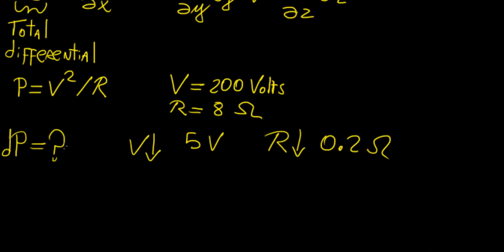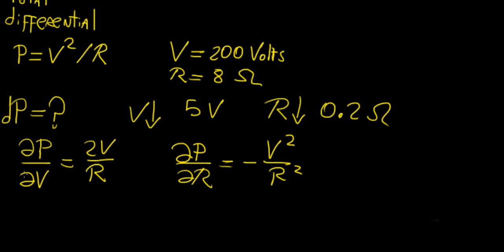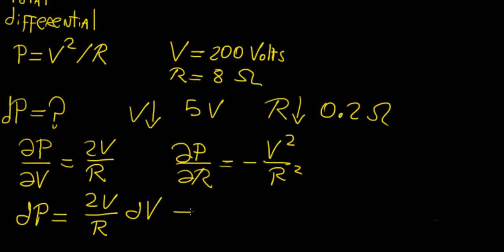So what is going to be the total change in the power if we change each of these quantities by that much? Well, the first thing we need to do is calculate the partial derivatives. The partial of p with respect to V is going to be 2V/R, and then the partial of p with respect to R is going to be negative V squared over R squared, such that the total differential dp is represented by 2V/R times dV minus V squared over R squared times dR.